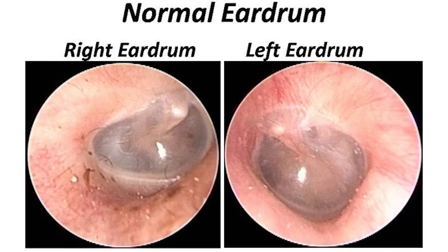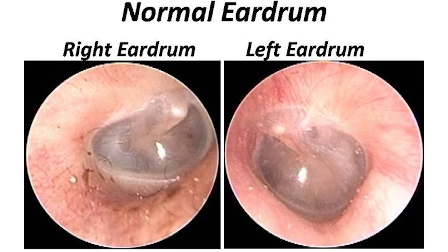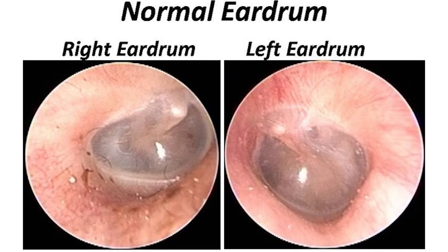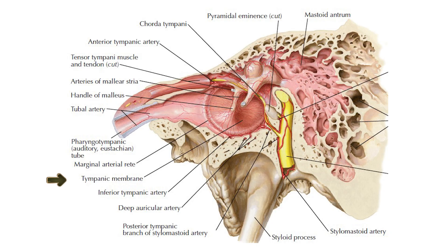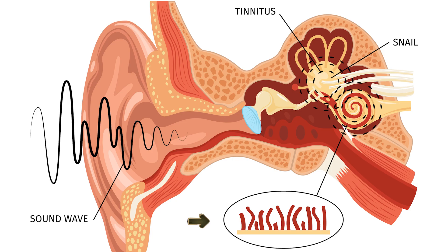The tympanic membrane, known as the eardrum, is a thin cone-shaped membrane located at the end of the ear canal that separates the outer ear from the middle ear. It plays a crucial role in hearing by transmitting sound vibrations to the ossicles, or tiny bones in the middle ear. Hair cells in the inner ear finally convert this vibration to electrical signals and carry them to the brain.